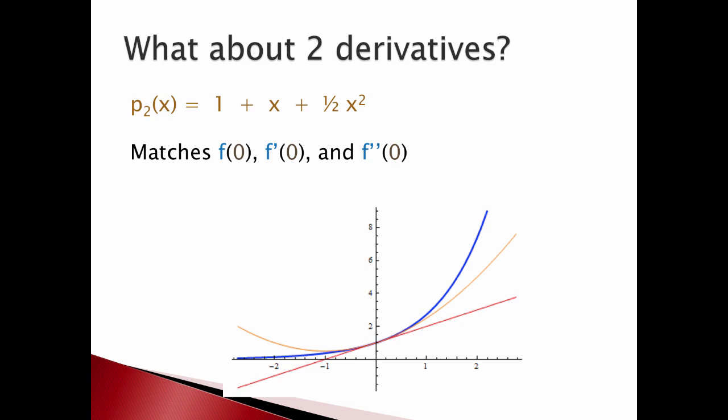So here's three graphs: the blue one is e to the x. Then I have my red tangent line and then in orange there is the tangent parabola. It matches up with the value of e to the x because the graph goes through the same point at zero. It has the same derivative and it has the same second derivative and you see that it fits pretty close.